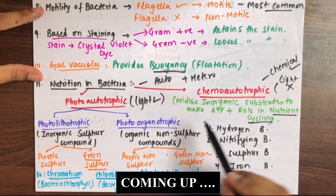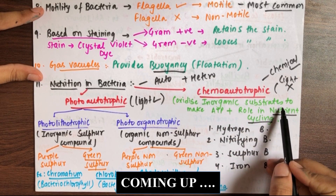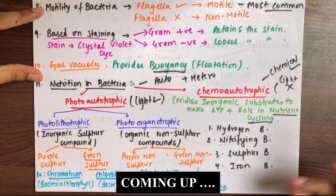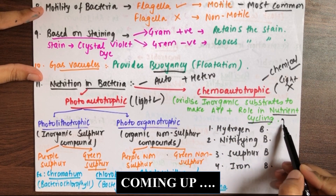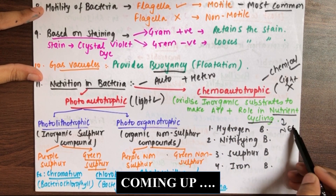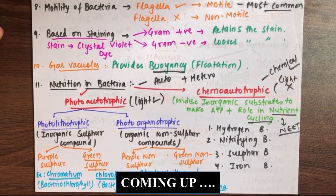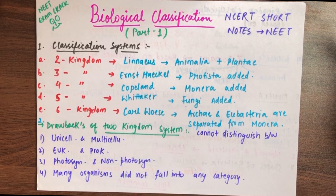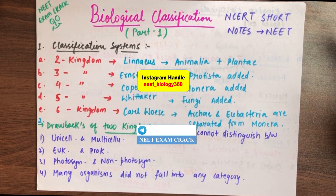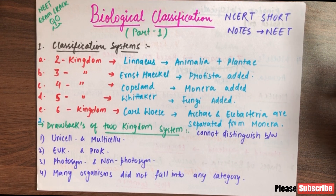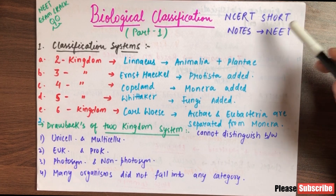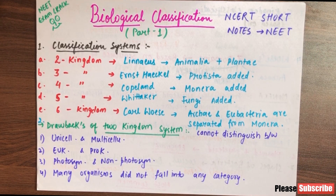Let's talk about chemo-autotrophic bacteria — they oxidize inorganic substrates to make ATP and their role is in nutrient cycling. Here we have a question from NEET: who plays the major role, photo-autotrophs or chemo-autotrophs? Welcome back to NEET exam prep. Today we are going to talk about the chapter of biological classification, class 11th, and we will cover NCERT short notes.